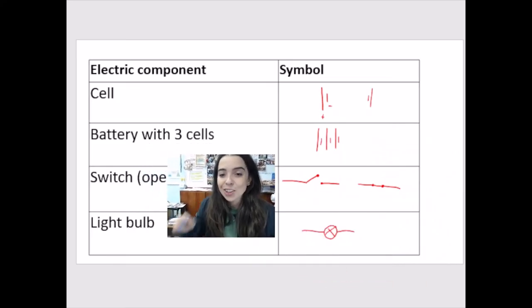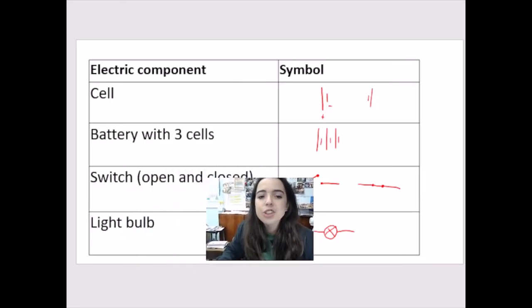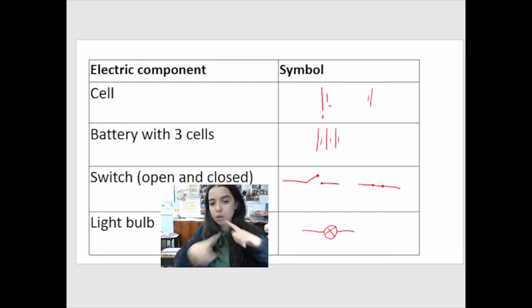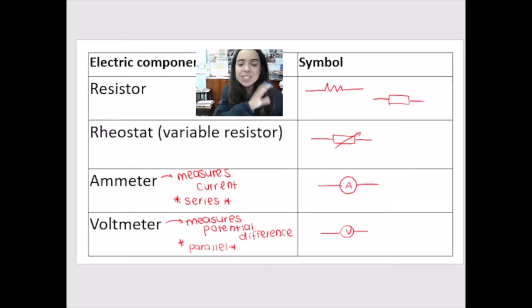Then switch, open, and closed. Draw the little dots to indicate that that is the switch. A light bulb is generally drawn as a circle with a cross through it. Resistors are generally drawn as this little squiggly line, or you'll see in a lot of tests and exams, and this is how I do it with my students, we do a little box.